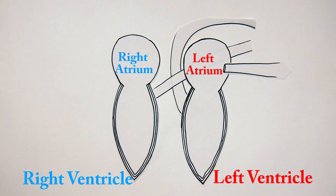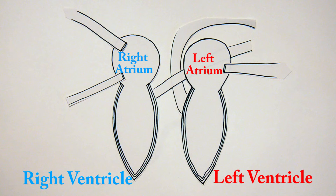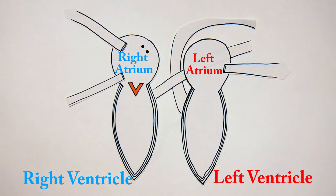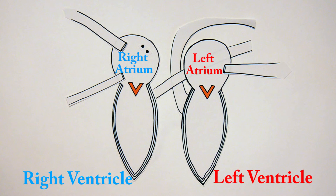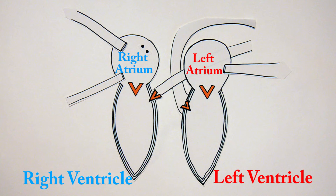Now it's time to draw the veins stemming from the left atrium as well as the right atrium. Located on the right atrium of the heart, there are two nodes. Now it's time to draw all the valves — one located between the right atrium and the right ventricle, another between the left atrium and the left ventricle, and valves located between the arteries and the right and left ventricles.